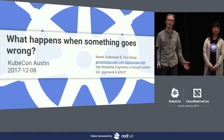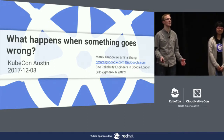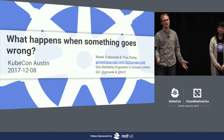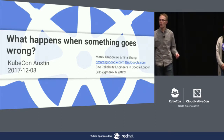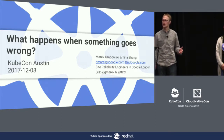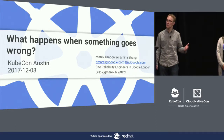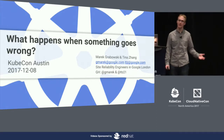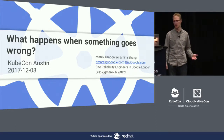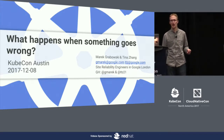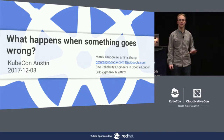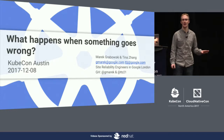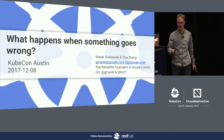What happens when there are some failures in the system? How the system tries to fix itself or mitigate the problems? What kind of problems can be fixed this way? And what are the limits of this automation? We would like to ask you to keep your questions till the end unless we say something completely unclear and we'll clarify.